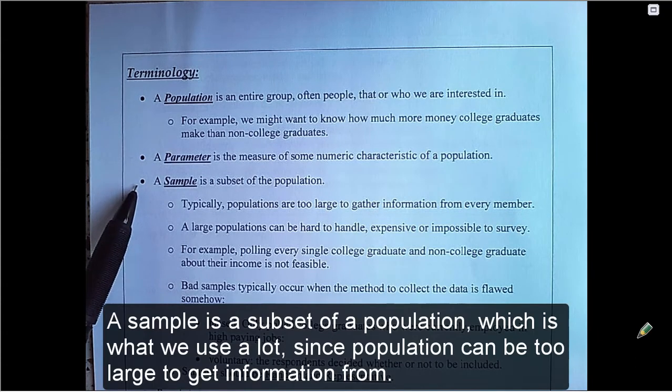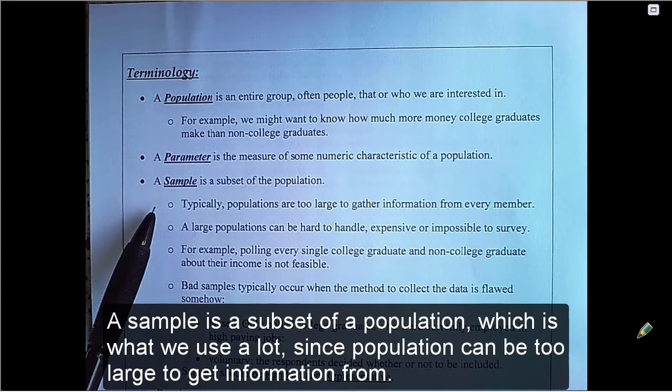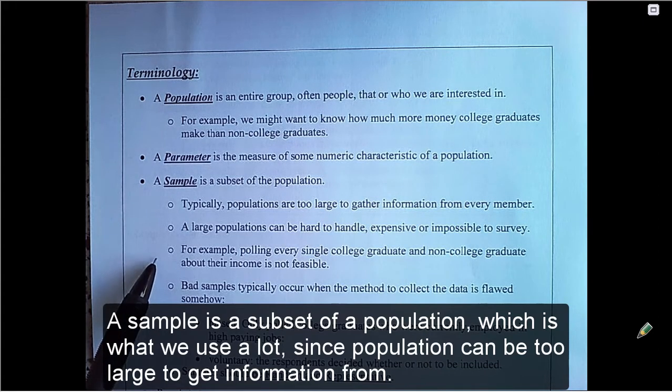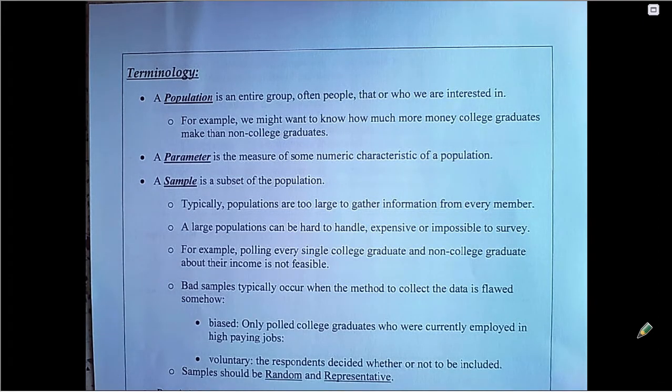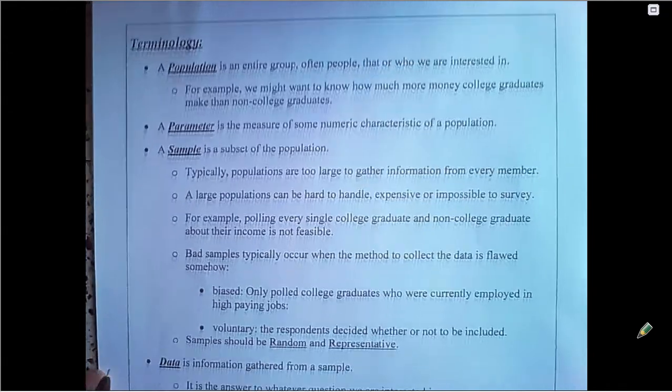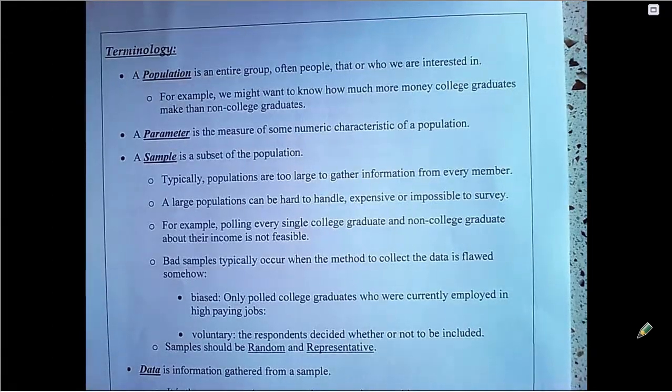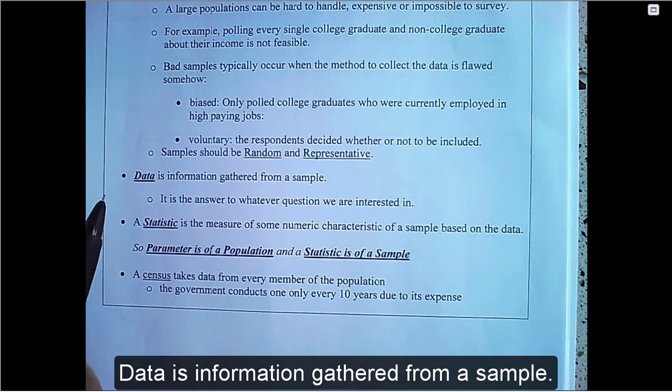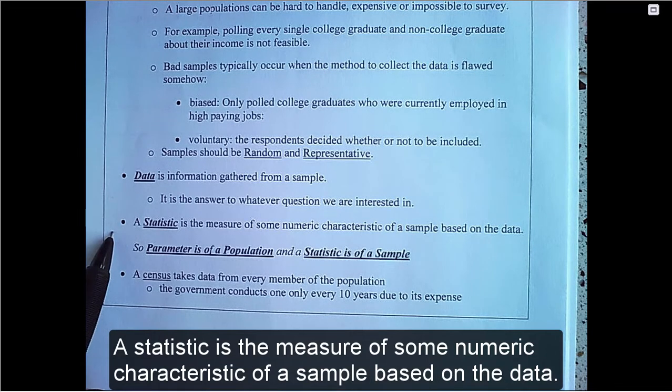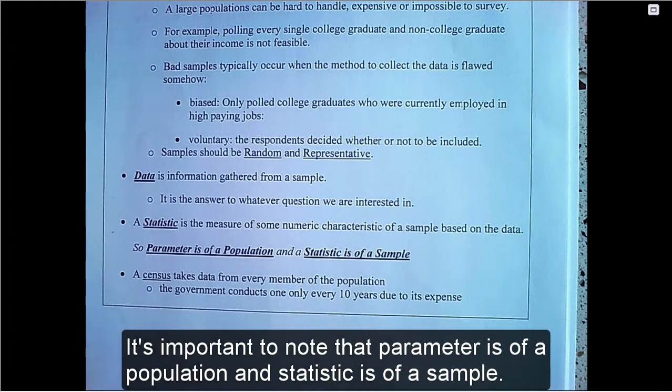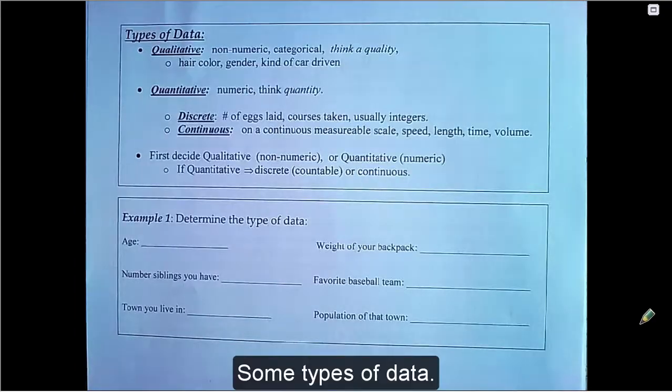A sample is a subset of a population, which is what we use a lot since population can be too large to get information from. A parameter is the measure of some numeric characteristic of a population. Data is information gathered from a sample. A statistic is the measure of some numeric characteristic of a sample based on the data. It's important to note that parameter is of a population and statistic is of a sample.